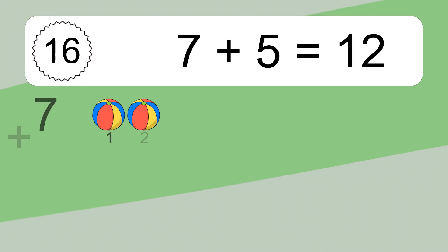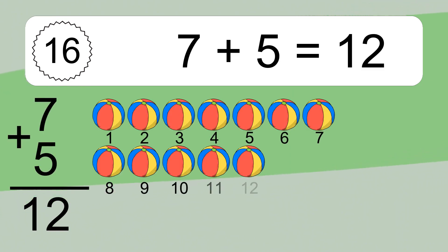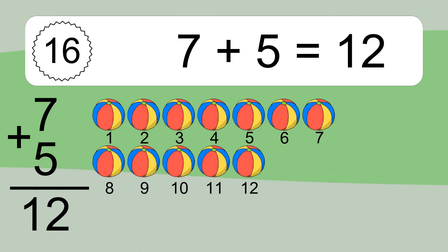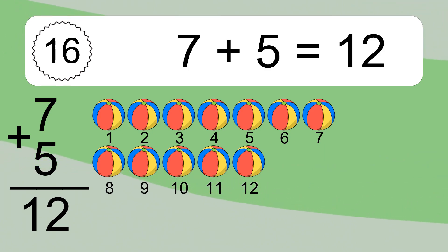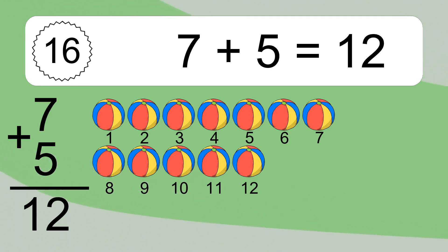5 plus 5 equals what? 7 plus 5 equals 12. Let's count it: 1, 2, 3, 4, 5, 6, 7, 8, 9, 10, 11, 12.